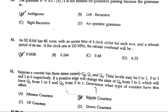Suppose a counter has three states: Q0, Q1, and Q3. Their levels may be 0 to 1, 0 to 1, and 1 to 0 respectively. If the positive edge changes the state of Q0 from 1 to 0, which forces Q1 from 1 to 0 and Q3 from 0 to 1, determine what type of counter has this effect. The answer is: ripple counter.